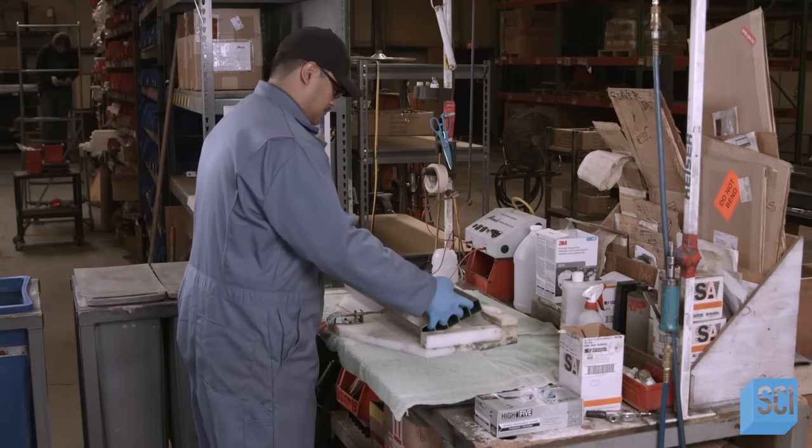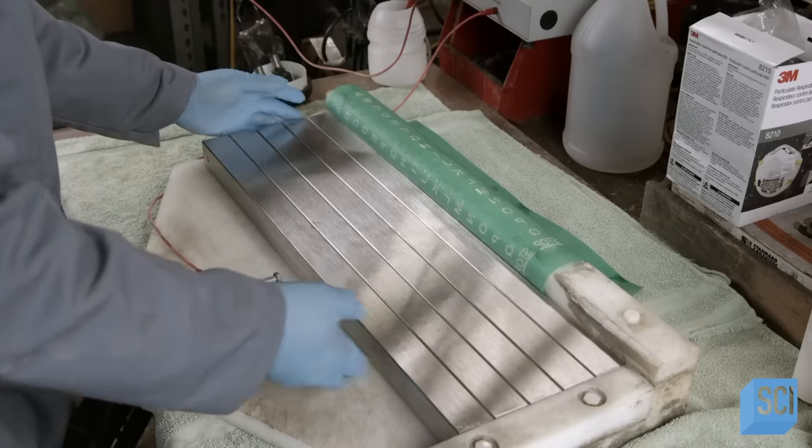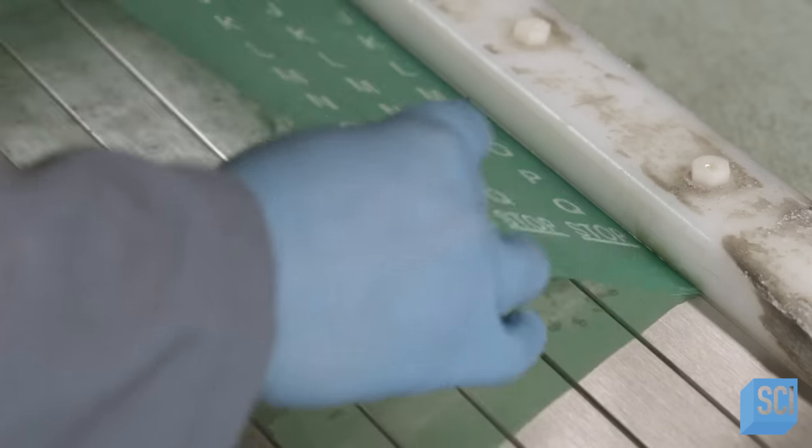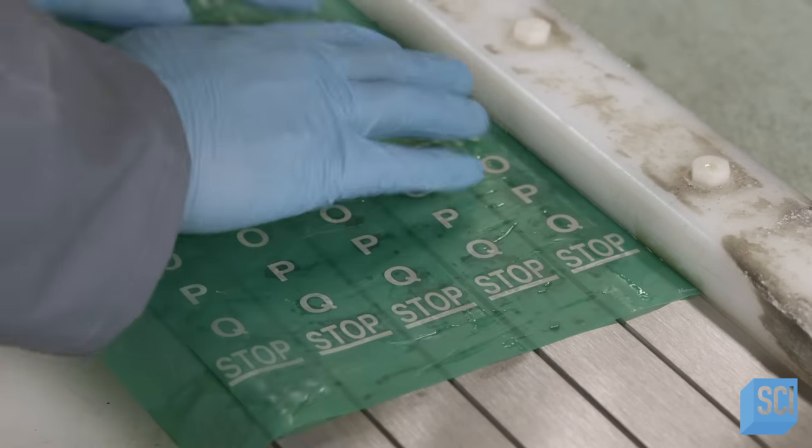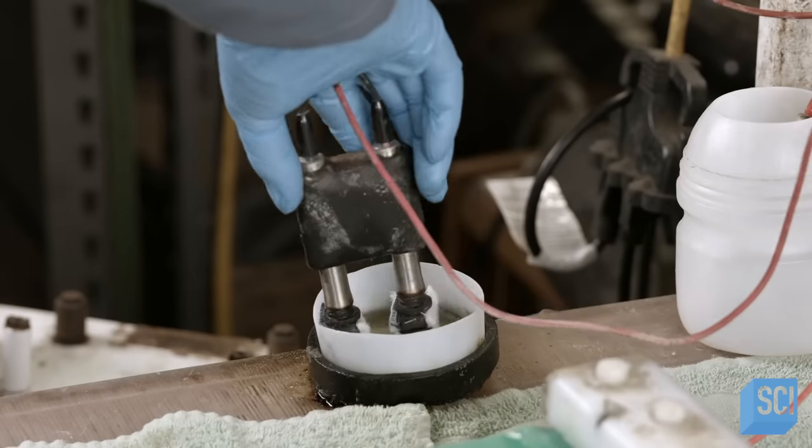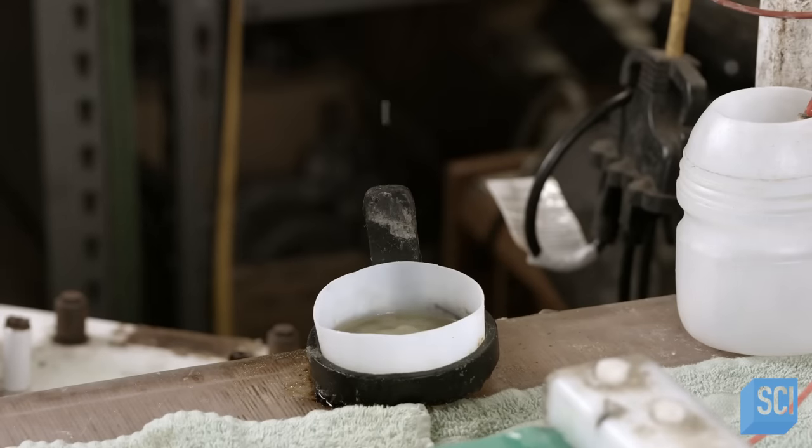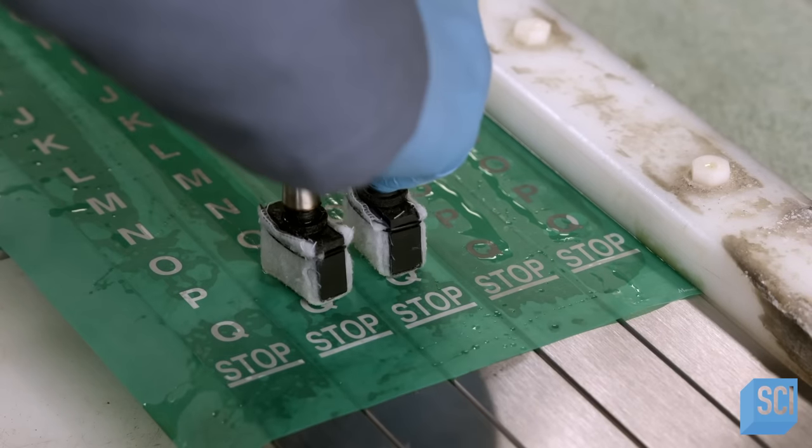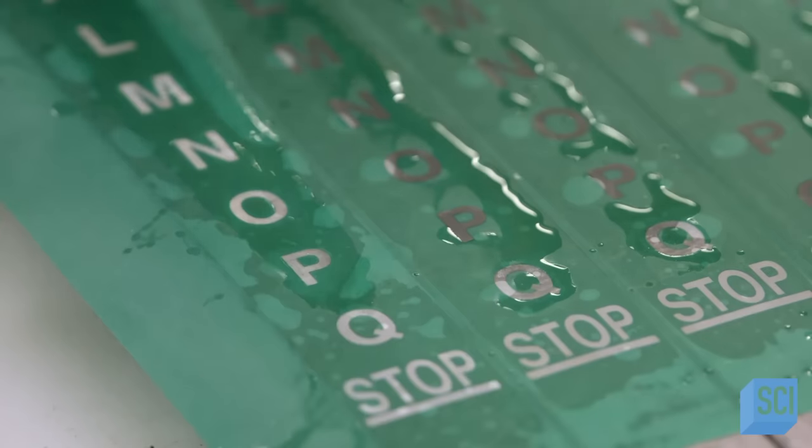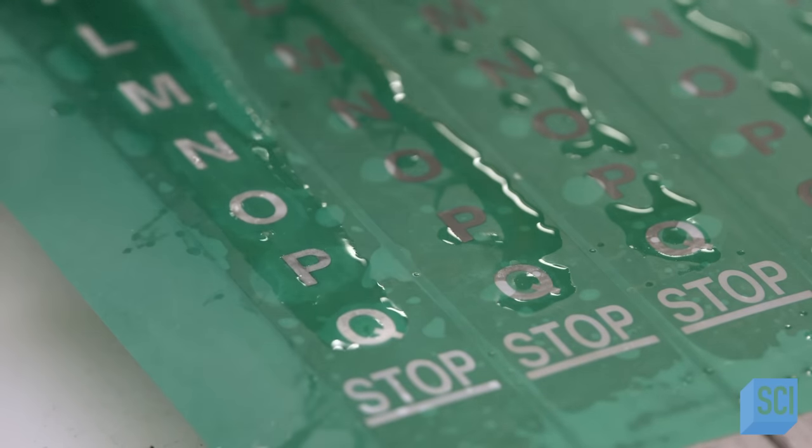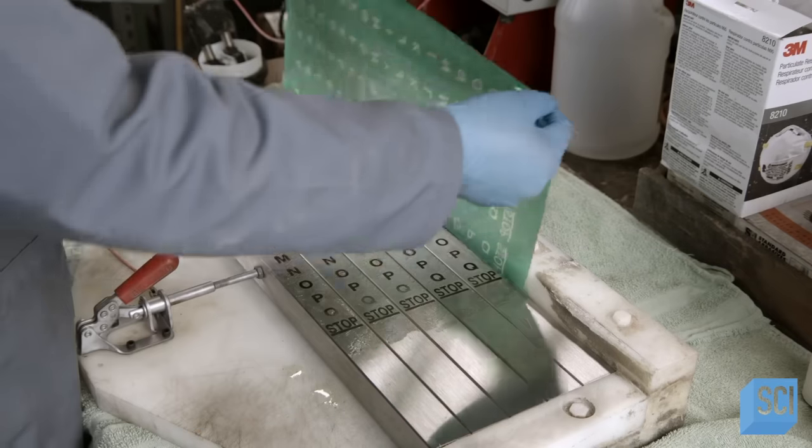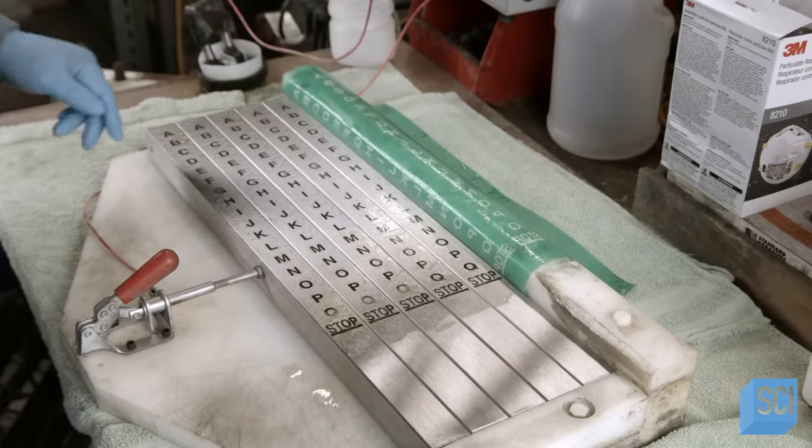At another station, a worker arranges numerous seat posts in tight alignment. He drapes a stencil of sequential lettering on top of the posts. He dips an etching wand in a chemical solution and then moves it over the letters five times. This burns the letters into the steel, providing markers for height adjustment.